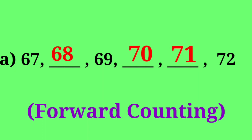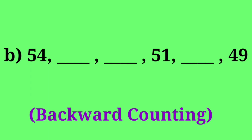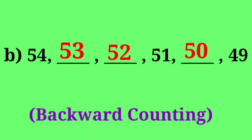See another one: 54, dash, dash, 51, dash, 49. If you observe this series, it is backward counting. So 54, back is 53; 53 before is 52; then 51, 50, 49. It is backward counting.